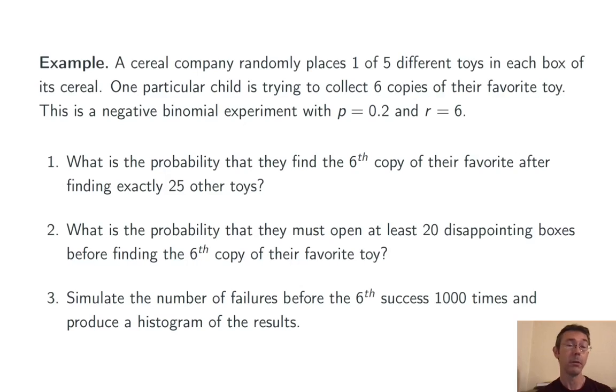Okay, let's do a few problems. A cereal company randomly places one of five different toys in each box of its cereal. One particular child is trying to collect six copies of their favorite toy. So here they only like one of the toys. Their probability of success each time they get a box of cereal is one in five or 0.2. They need six total successes. So the other parameter here is r equals six.